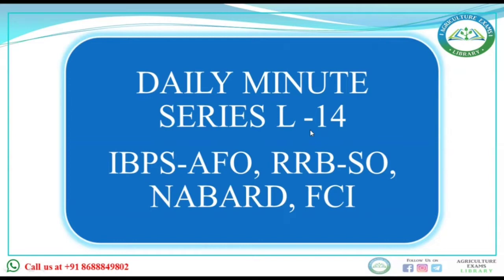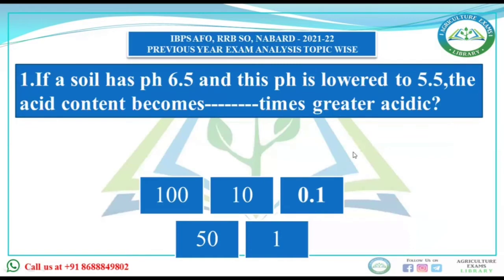Let's begin. The first question is: if a soil has pH 6.5 and this pH is lowered to 5.5, the acid content becomes how many times greater? When we lower the pH by one unit, the acidity of the soil increases by tenfold. If it is reduced by two units, for example to 4.5, then 10 × 10 = 100 times the acidic nature of the soil increases.